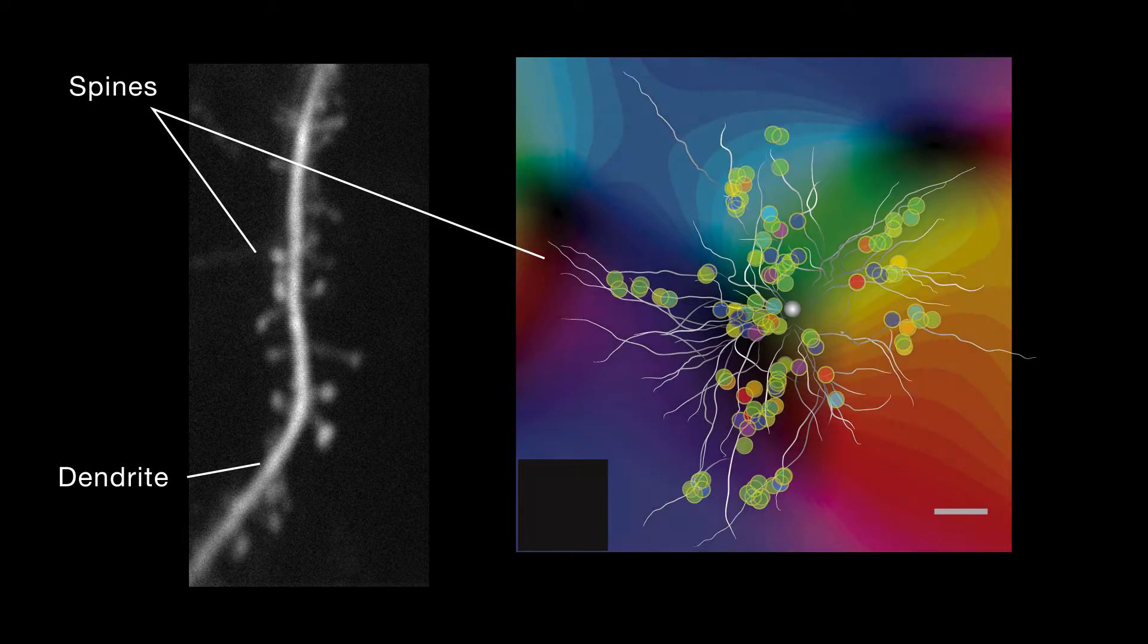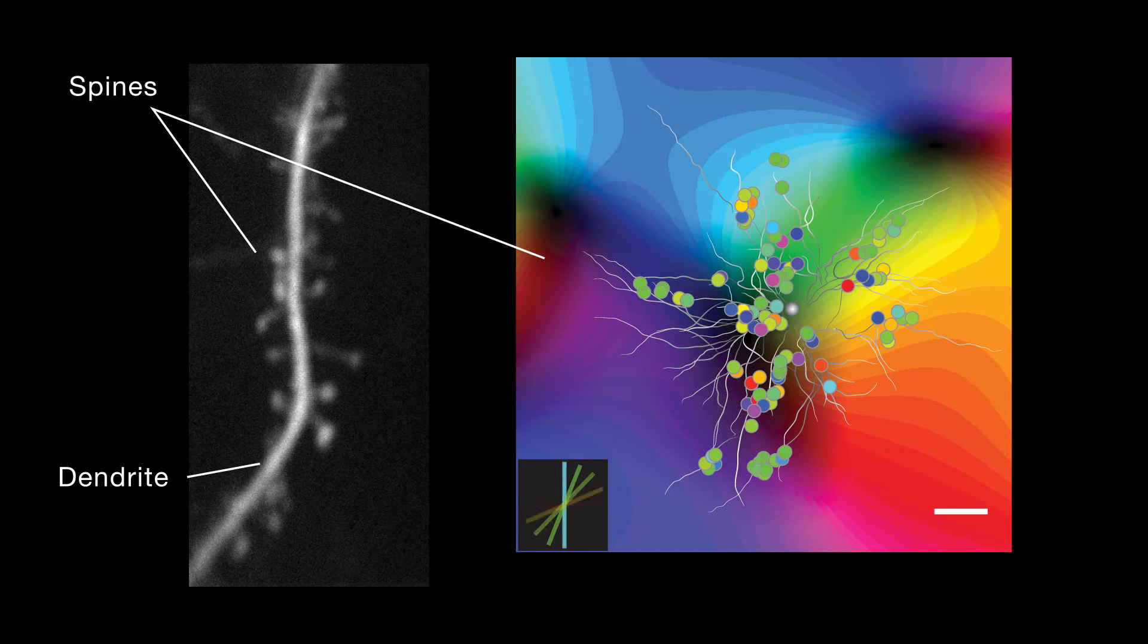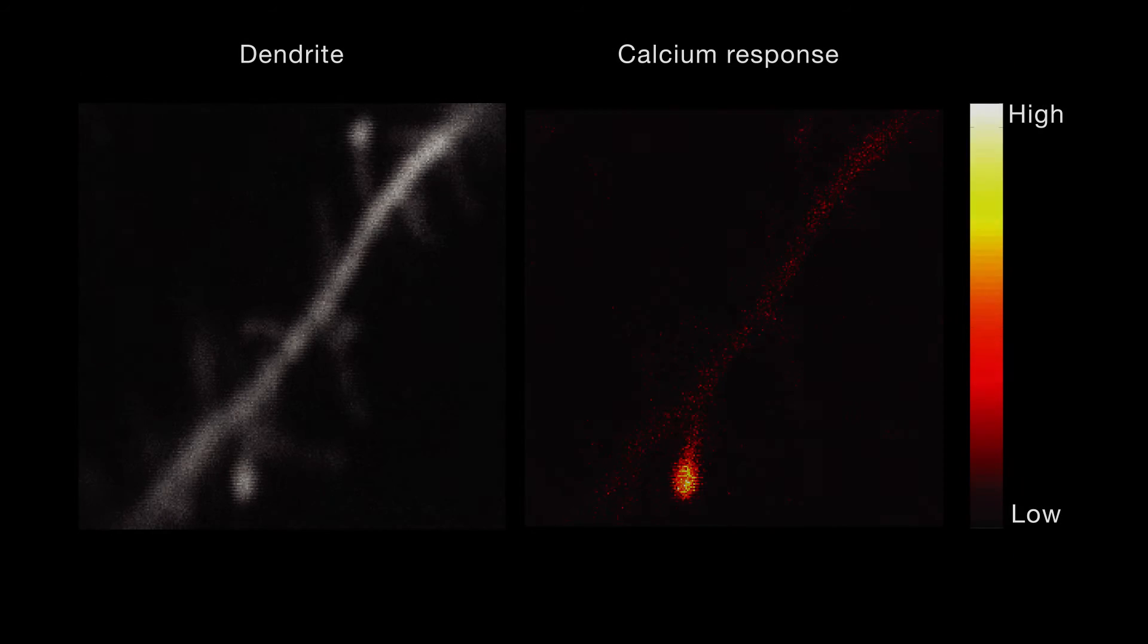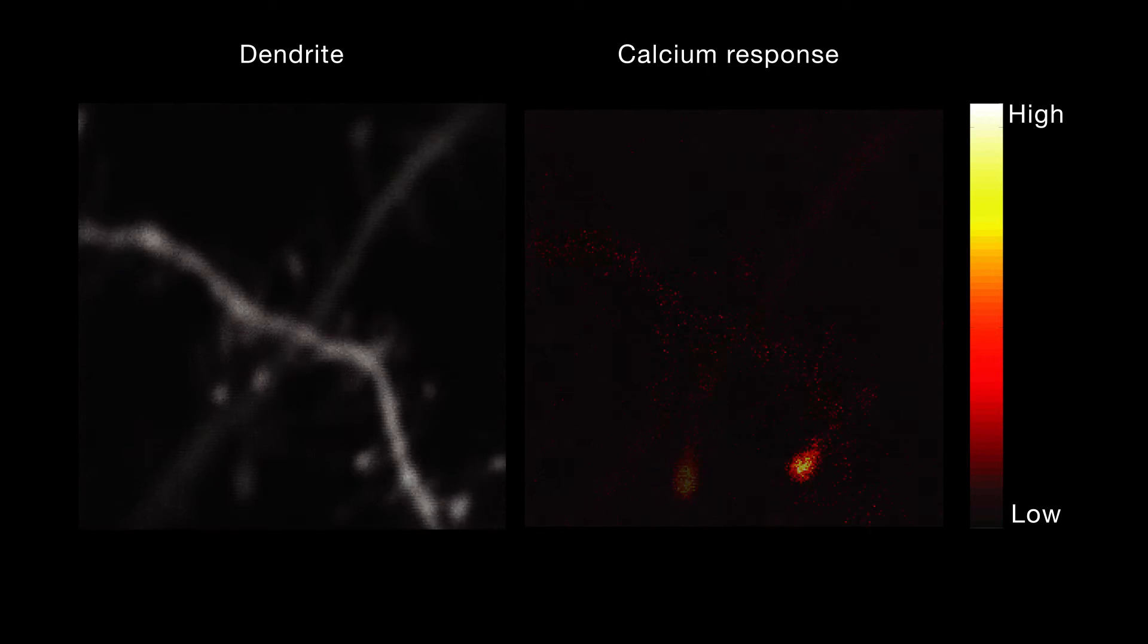Differences in orientation selectivity could simply reflect differences in the range of orientations the neuron receives information about through its spines. To test this possibility, the researchers recorded the calcium responses of many spines of many individual cortical neurons.